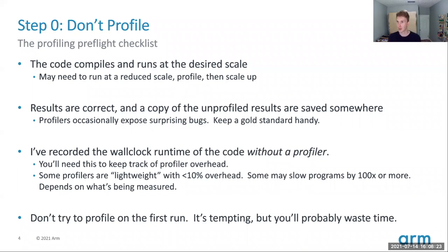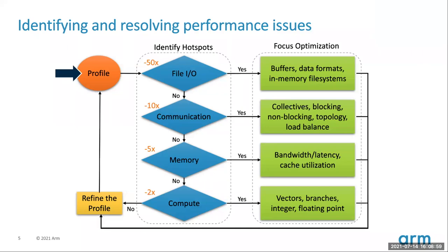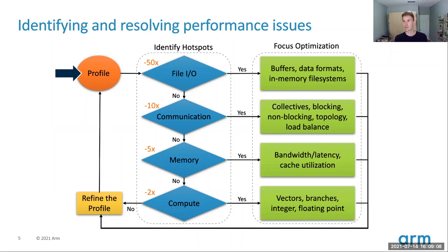Once you've got a good sense of how your code compiles and runs and you know what good looks like, it's time to pull out your profiler. Start by taking a profile — use a tool that is good for the metrics you care about. Think about an application's performance as a composition of different characteristics: file I/O, communication, memory, and compute. I'd strongly encourage you to focus on one of these characteristics at a time rather than trying to optimize multiple aspects simultaneously.